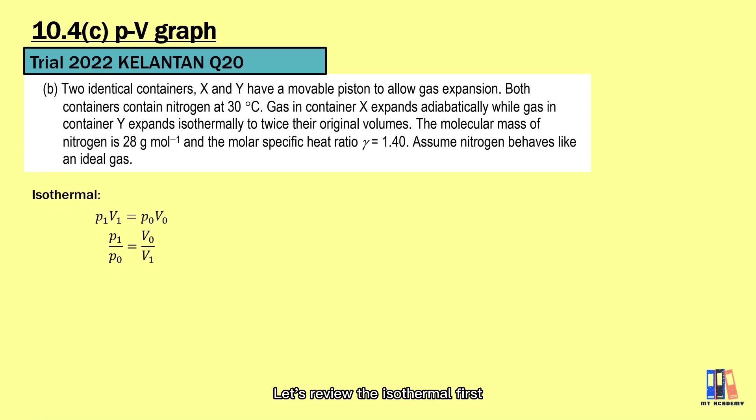Let us review the isothermal first. We can apply the ratio PV as constant to learn about the pressure. The final pressure will be half of the initial pressure, and this is aligned as what we have learned about isothermal process. Since the pressure is inversely proportional to the volume, hence the pressure is reduced when the gas expands. For temperature, it will maintain as 303K since it is an isothermal process.